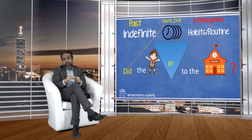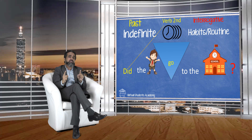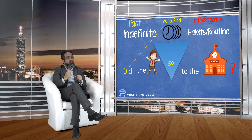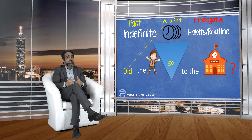If you have a paper check or written document, remember: in one sentence, one clause, you will not have the second form two times. The helping verb 'did' already carries the past, so the verb reverts to first form. The correct sentence is: 'Did the boy go to the school?'